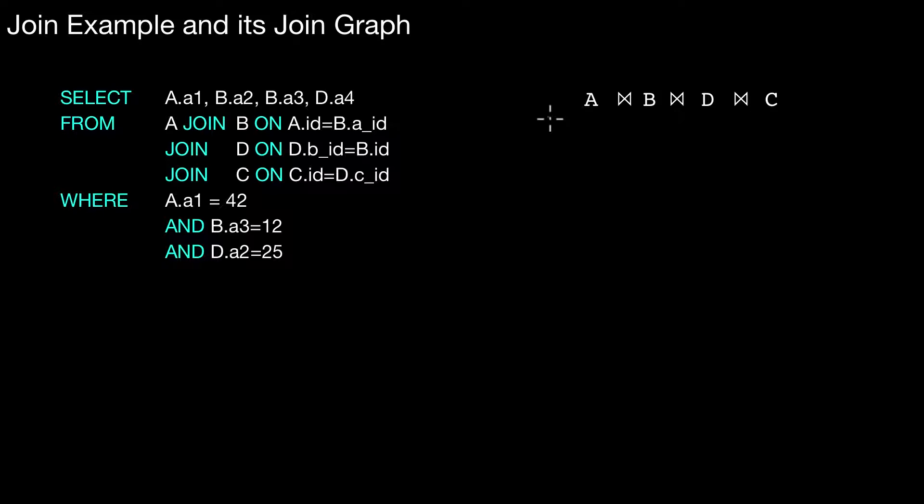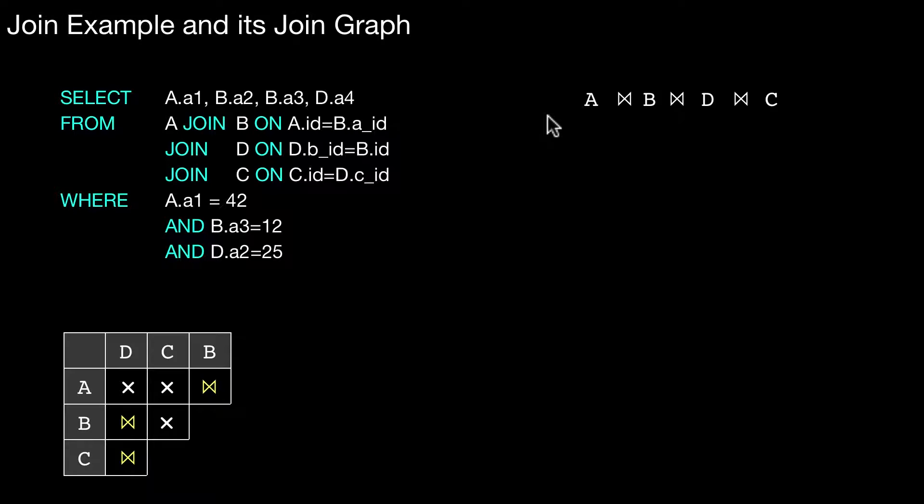One other option of visualizing what is going on here is the following. We could write this in a table like that. We have the relations A, B, C and here we have D, C, B. And whenever in the intersection of the columns and the rows there is a join condition, then we write the join symbol. If not, there is basically a cross product.